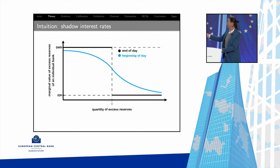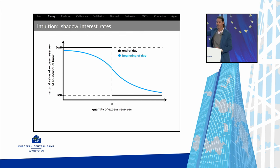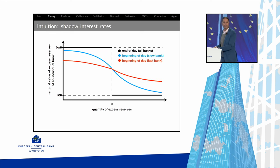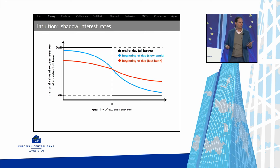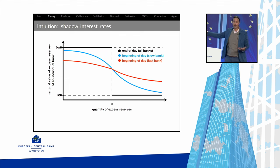Similarly, the marginal value of a dollar is bigger if you're in excess, because there's a chance you meet a desperate counterparty and sell it above IOR. During the day this curve shifts, and at end of day it looks like the end-of-day step function when trading options are gone. A fast bank — one that meets more potential trading partners per unit of time — has a smoother, flatter marginal value curve because the option value of trade is larger: it's as if the fast bank has more time on the clock.